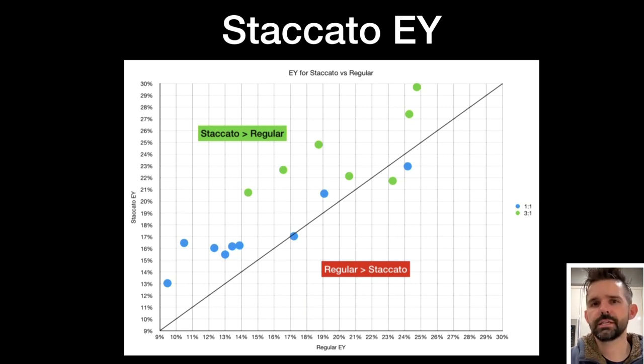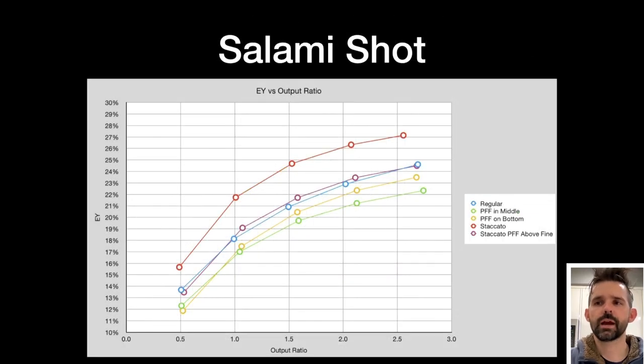So I wanted to dig further into this. So I did a salami shot with regular. I did a paper filter, which I call a PFF in the middle. I did a paper filter on bottom staccato and then staccato with a paper filter in the middle, or really above the fines. This showed that the extraction rate for staccato was just plain higher than the rest. And so you're hitting a very high ratio in the first one-to-one. If you go beyond that, you're risking over extraction while a regular shot has to be pulled for longer to hit the same extraction yield.